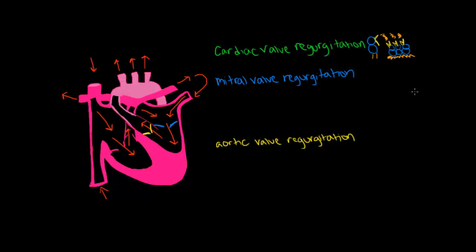Remember, regurgitation means to rush back. So what is rushing back during mitral valve regurgitation and aortic valve regurgitation? Instead of the blood following the normal pathways that we outlined, a little bit of blood, or sometimes a lot of blood, will rush back upwards in the wrong direction through these valves.